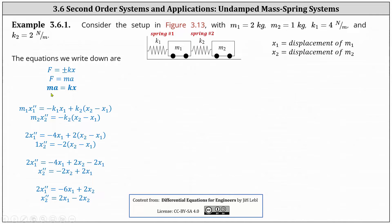For the second equation, we consider mass two. On the left we have mass two times acceleration given by x two double prime. On the right, the only spring affecting mass two is spring two. As mass two moves to the right, spring two is stretched and will pull back to the left, giving a negative force equal to negative k two times the amount spring two is stretched, which is the difference of x two and x one.